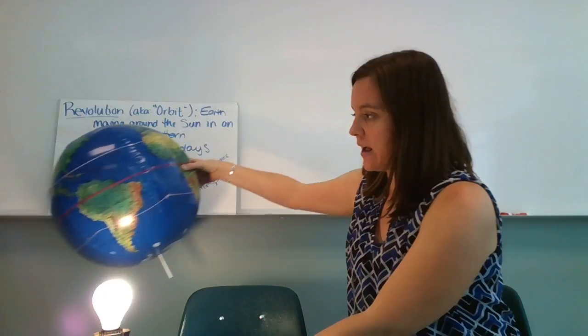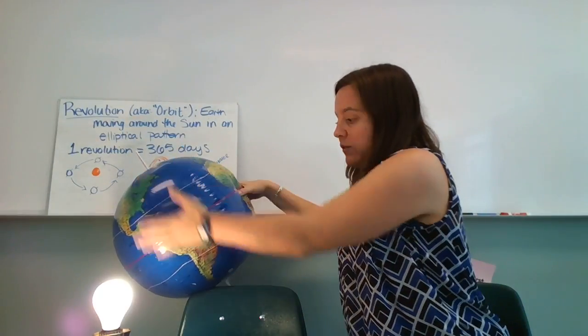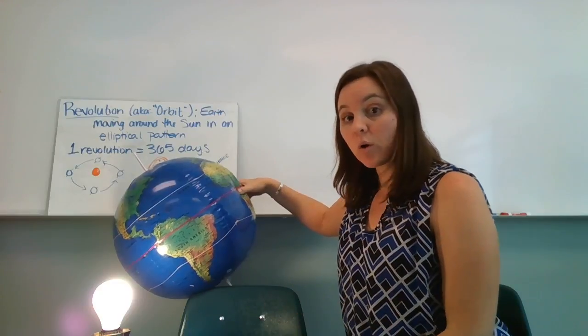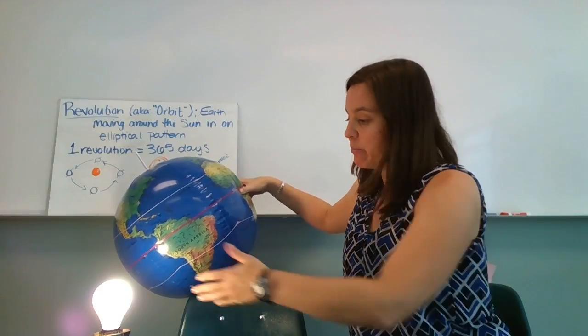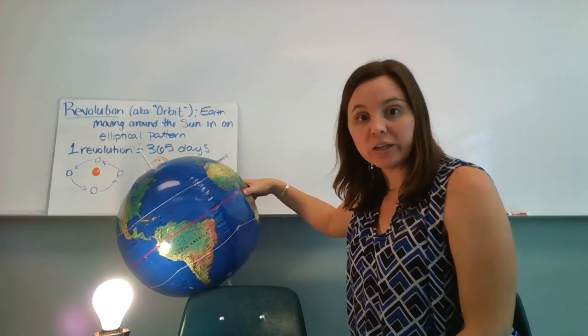And as the earth travels around, when it gets to these kind of middle points, the northern hemisphere and the southern hemisphere are not pointed towards or away from the sun. And so they're both getting equal amounts of sunlight. The sun's pretty much hitting straight on at the equator. And this is spring and fall.